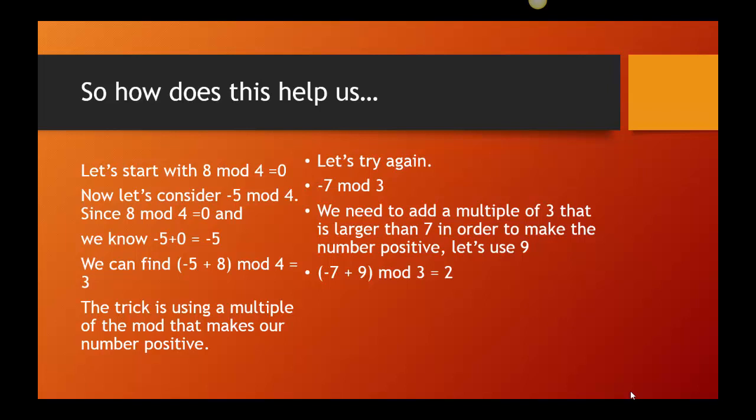So, remember that when I add 0 to a number, I don't change it. So, when I add negative 5 plus 0, I get negative 5. But in this situation, 8 also works like a 0. So, I can add negative 5 plus 8, which I know is 3. And now I've turned my negative 5 into a positive 3, and I have my answer.